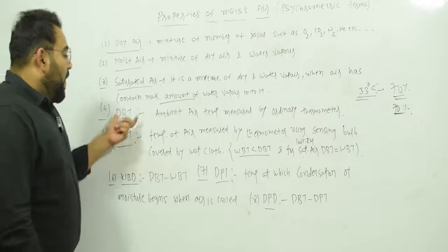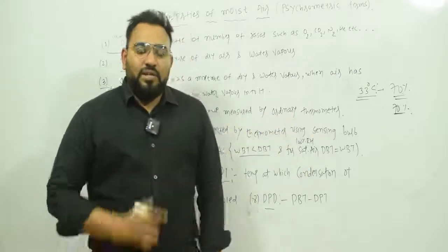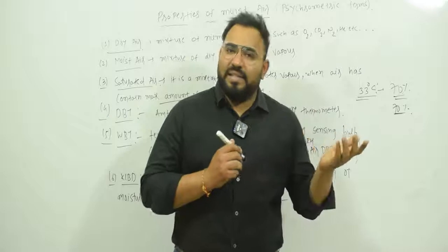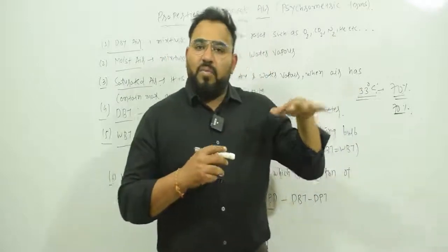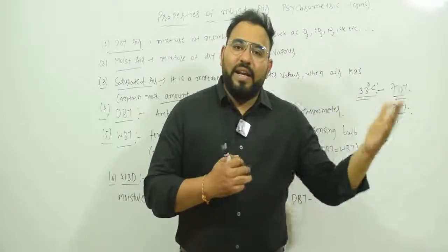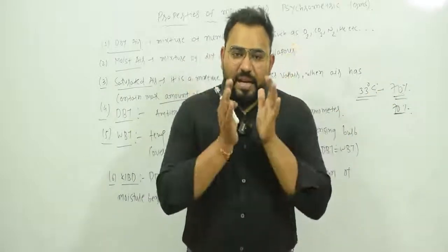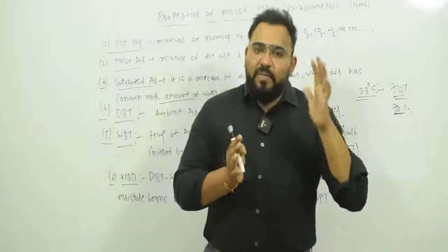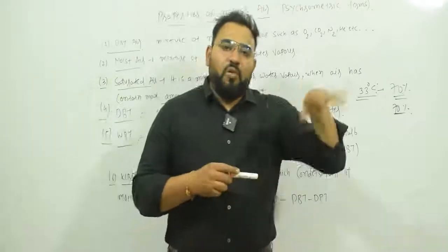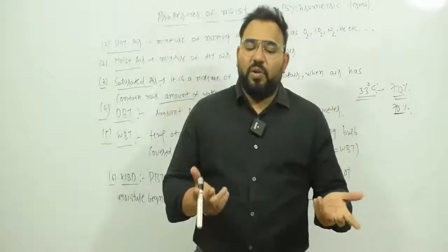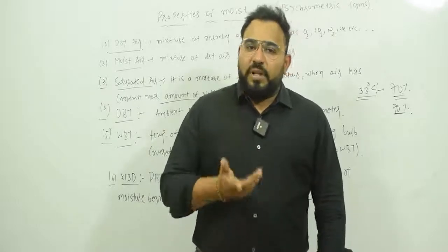So saturated air is a mixture of dry air and water vapor when the air contains its maximum amount of water vapor. Next is dry bulb temperature. It is the temperature of ambient air measured by an ordinary thermometer. Whatever the temperature is right now — say 28 degrees Celsius — that is called the dry bulb temperature. It is nothing special; it is simply the current ambient air temperature.